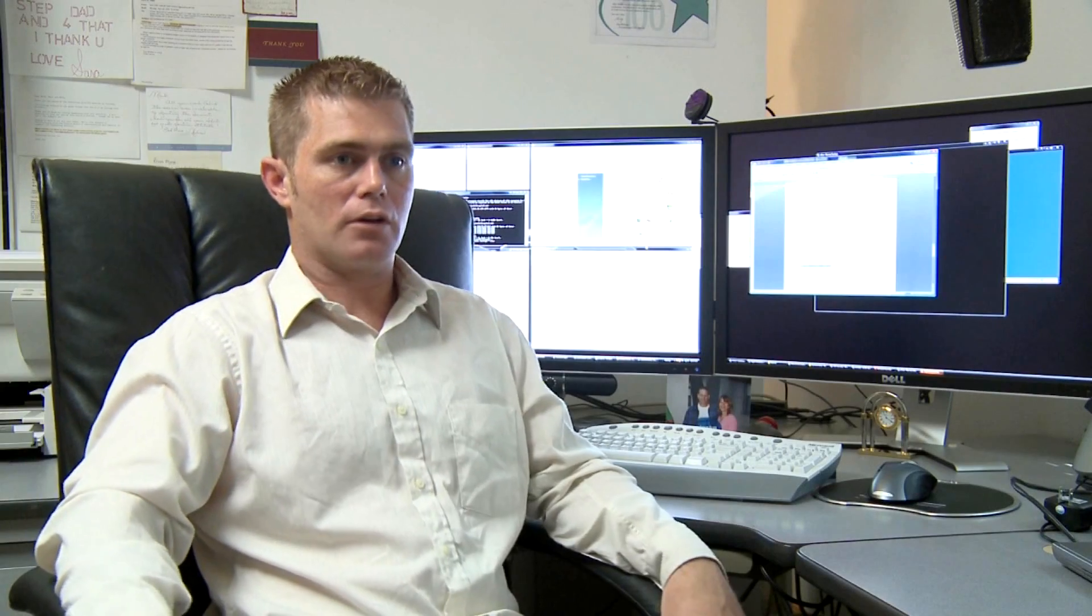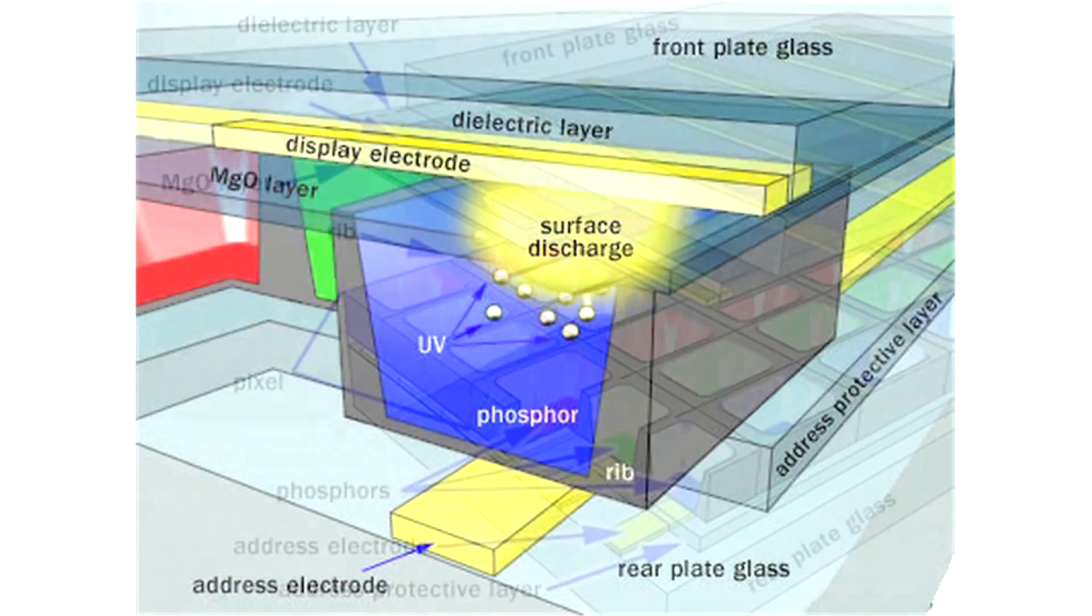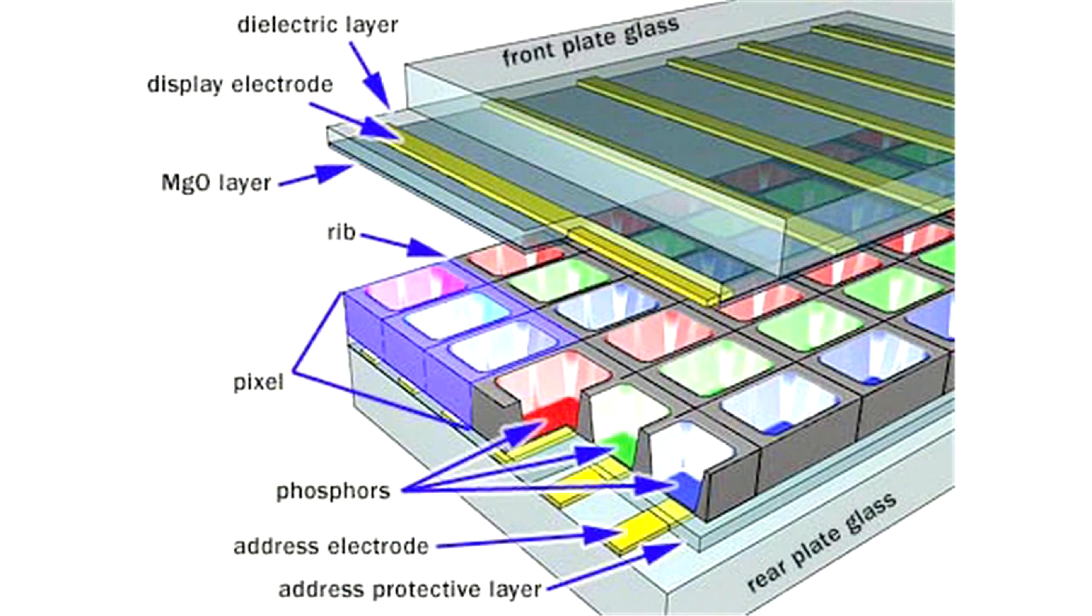And how a plasma screen monitor works is, in receiving the video signal, it uses thousands and thousands of tiny diodes or LEDs to illuminate pixels on the monitor.